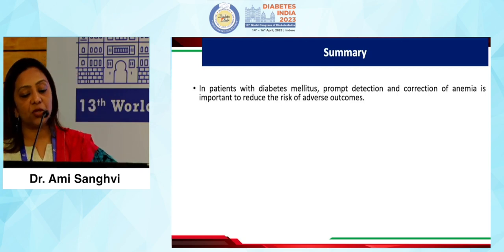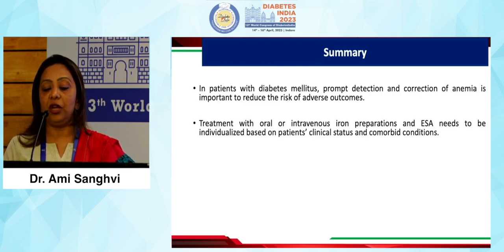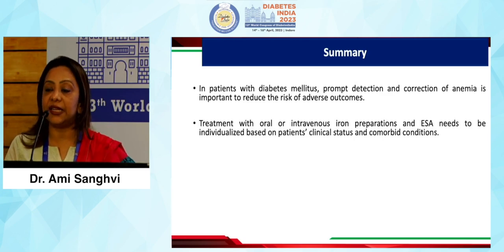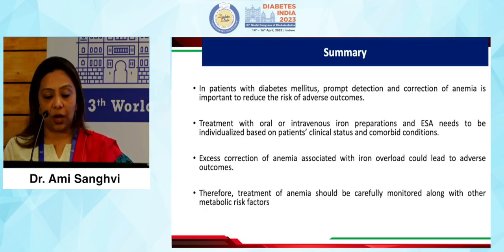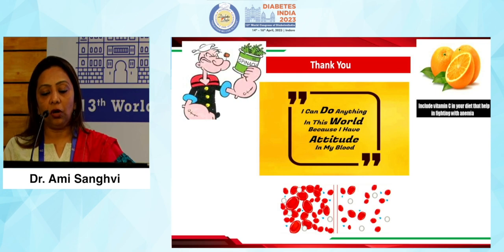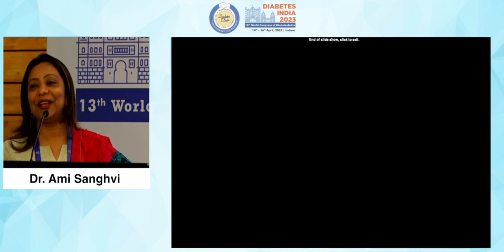In summary, in patients with diabetes mellitus, prompt detection and correction of anemia is important. Treatment with oral or IV iron preparations and ESAs needs to be individualized based on clinical status and comorbid conditions. Excess correction of anemia associated with iron overload leads to adverse outcomes, and therefore treatment of anemia should be carefully monitored alongside other metabolic risk factors. Thank you all for your patient hearing.